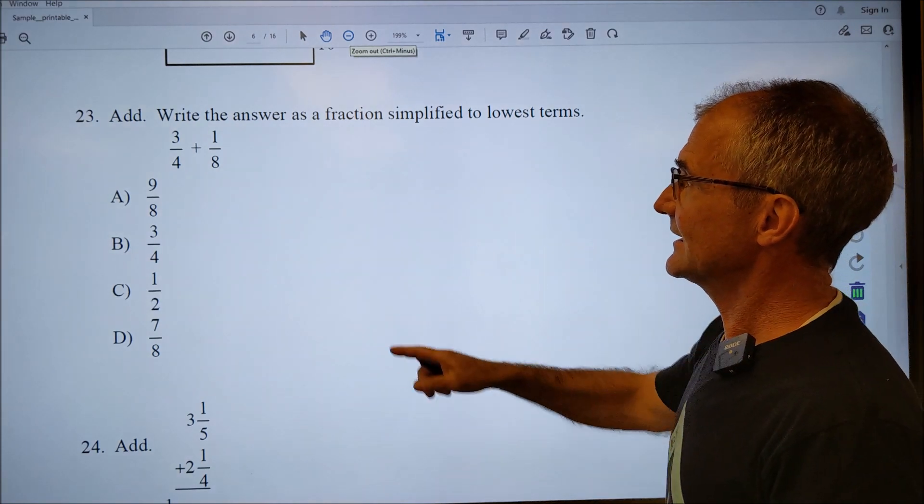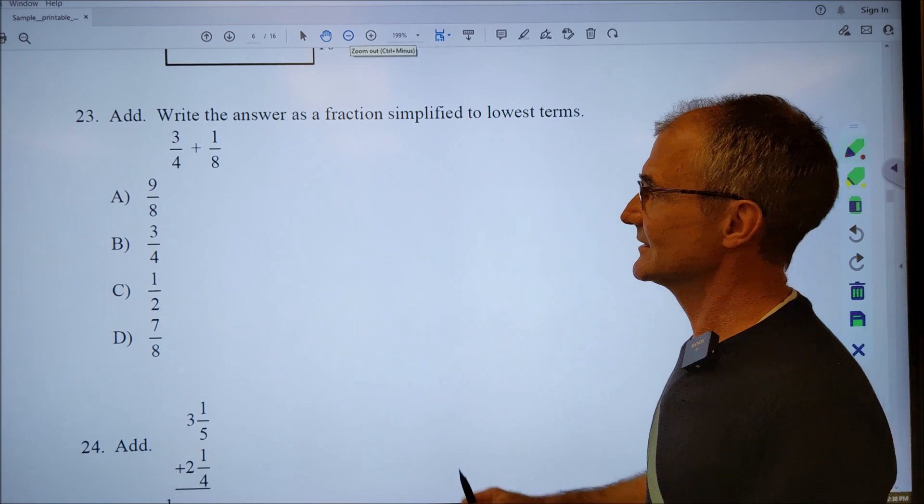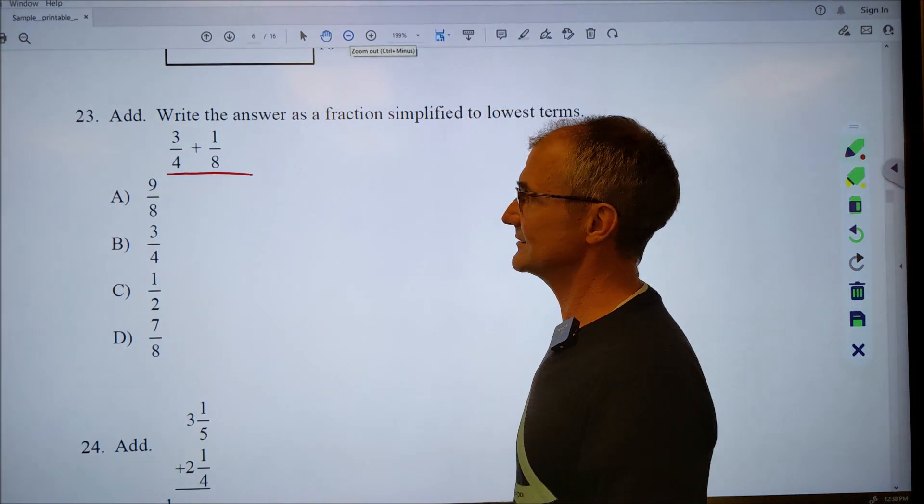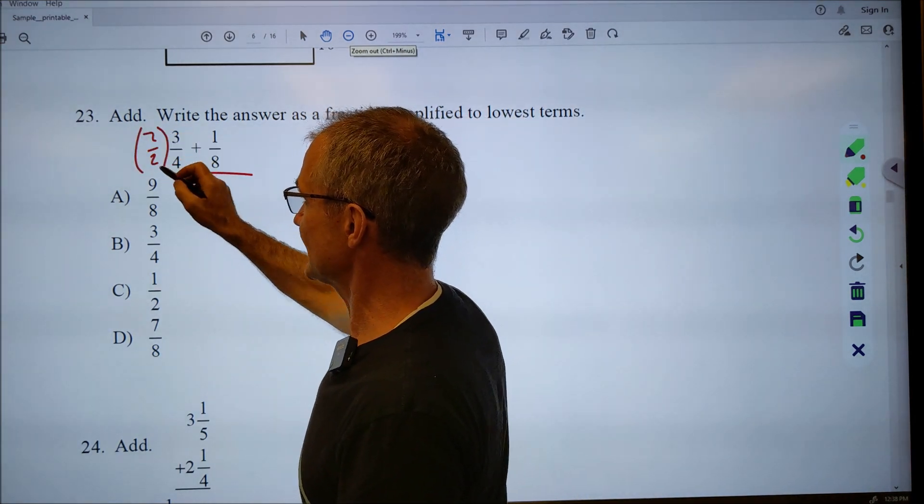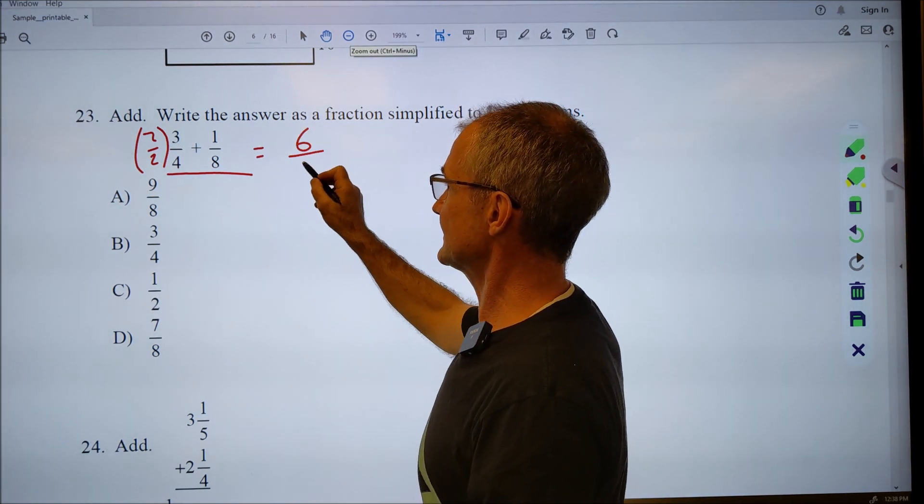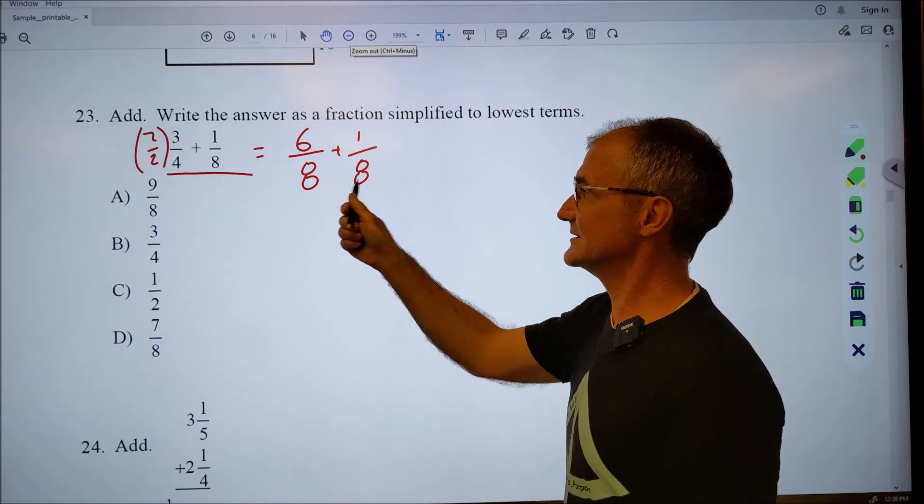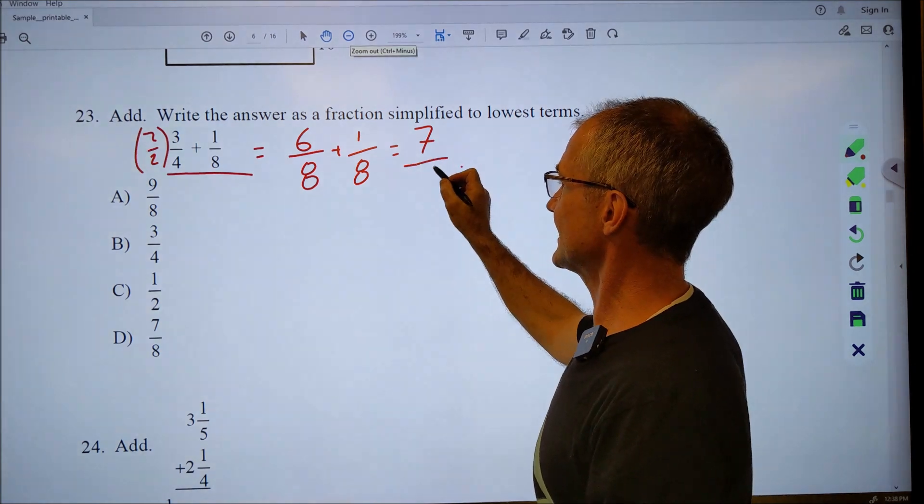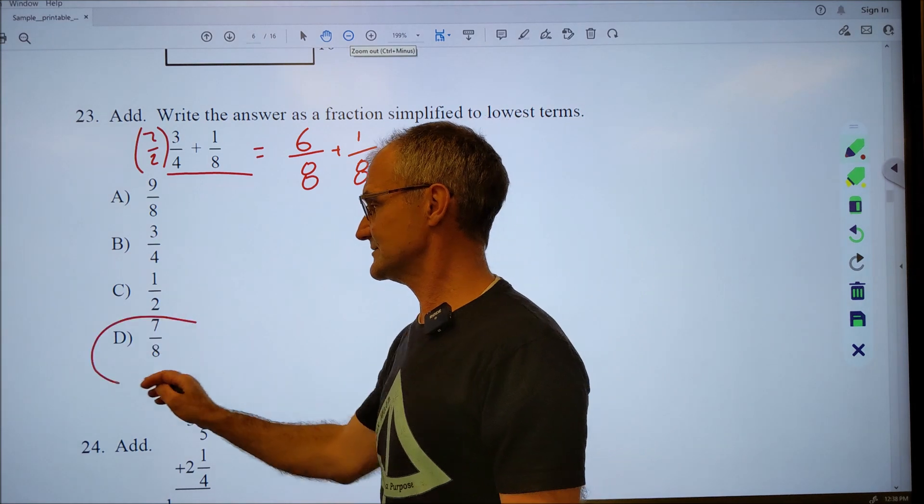Number 23, add, write the answer as a fraction simplified to the lowest terms. Again, to add fractions you have to have the same denominator. It is not the same here. So I'm going to have to multiply this first fraction by two over two. That's going to give me six over eight plus one over eight. I have that common denominator of eight. Now I add across the top to get seven. I keep that common denominator on the bottom eight and my answer is seven eighths, answer D right here.